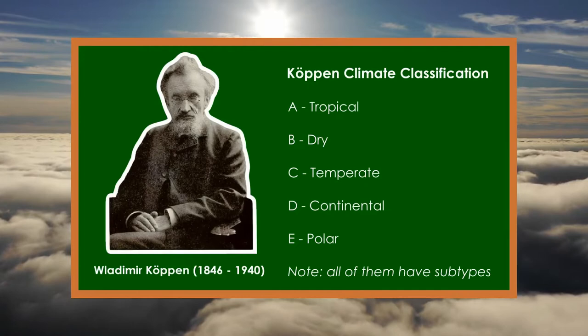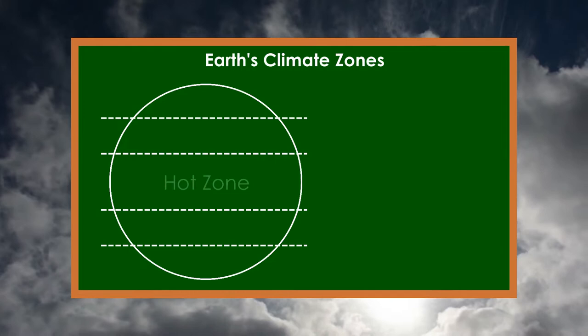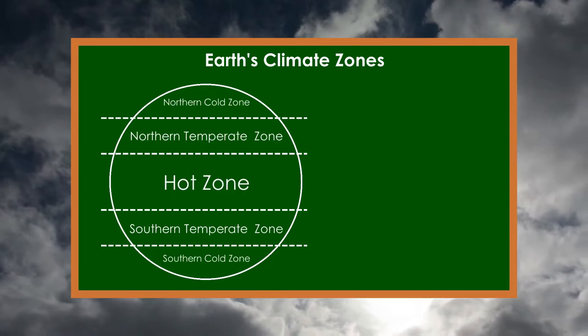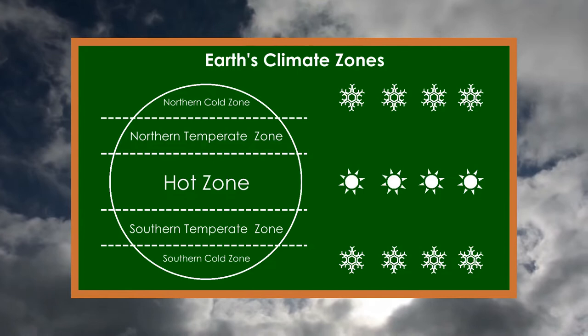It is worth mentioning the division into climate zones established during the time of ancient Greeks. According to this division, the Earth can be divided into one hot zone, two temperate, and two cold zones, going from the equator to the poles. They differ in the alternation of the seasons. In the hot zone and the polar zones there are no differences between the seasons, while in the temperate ones there are clearly pronounced transitions between all four seasons.